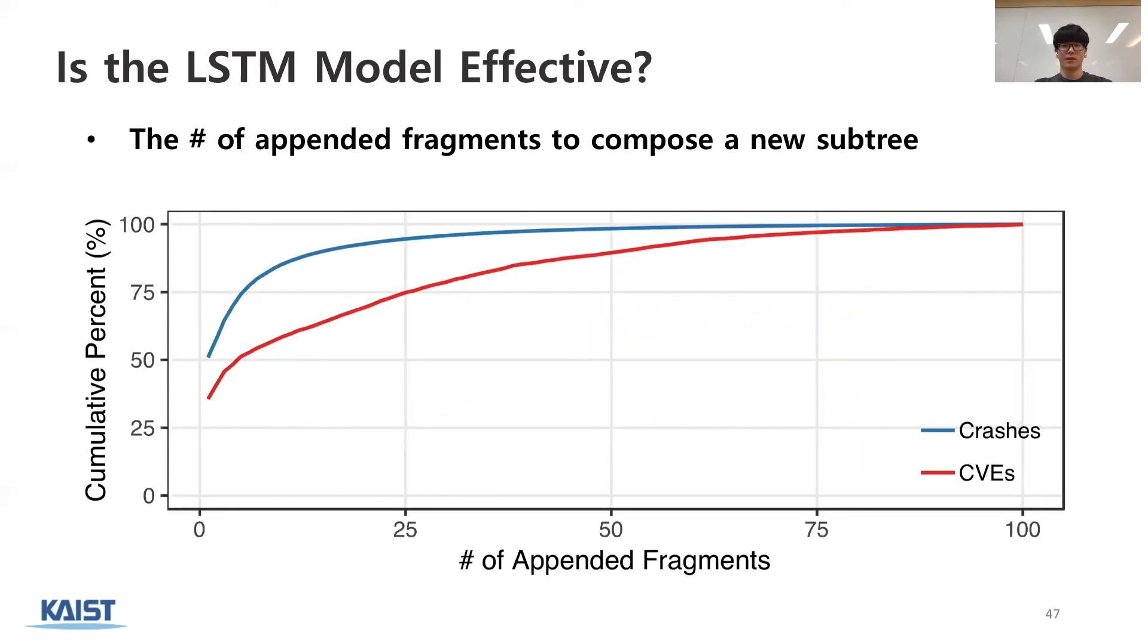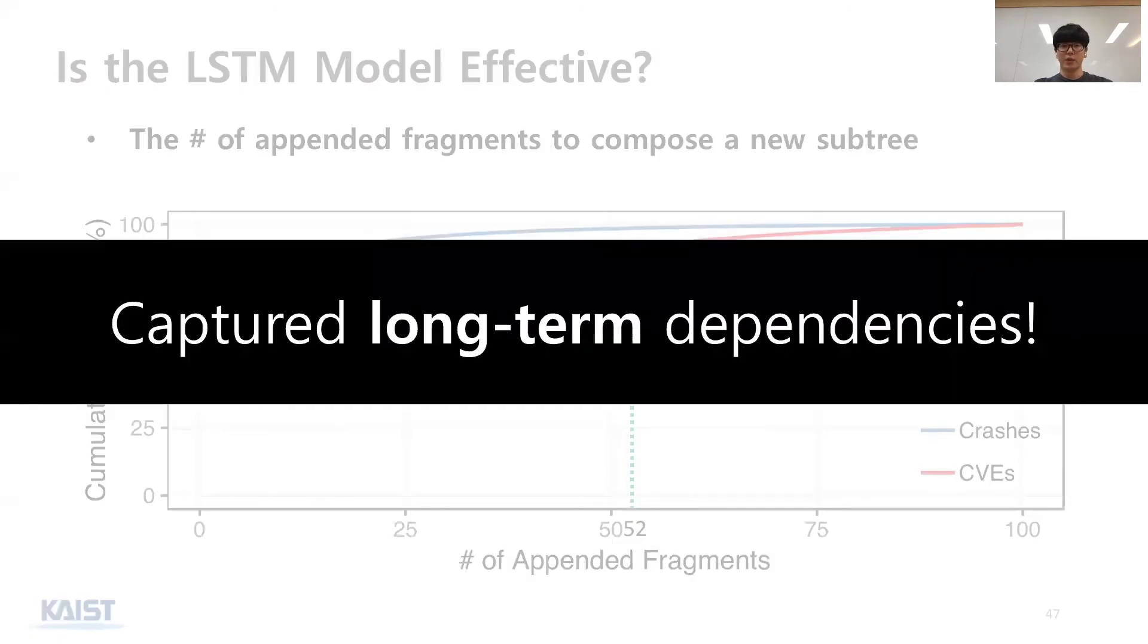We further analyzed JS code created by Montage. This graph shows how many fragments are appended to compose a new subtree. As the red line shows, to trigger 90% of security bugs found by Montage, it appends up to 52 fragments. In other words, given a sequence, the LSTM model captures long-term dependencies between fragments and effectively predicts the next fragment.